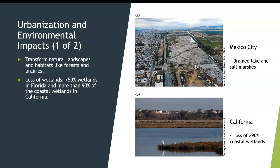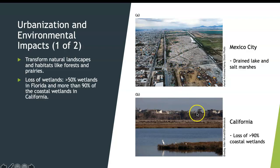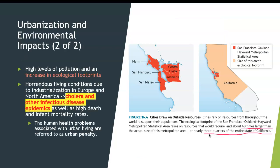The environmental impacts of urbanization: we transformed an incredible amount of natural resources during development, and we lost a lot of ecosystems such as wetlands. This picture shows Mexico City — the valley of Mexico City used to be a lake. The lake was drained, the salt marsh is gone, and it's all converted to residential area. In California, the coastal wetlands lost more than 90 percent due to development. Those metropolitan areas have very big ecological footprints.